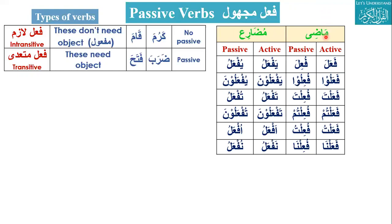In the madi tense, the active voice is fa'ala. The first letter gets dhamma (pesh), the second letter gets kasra, and the last letter doesn't change. If some letter has a sukoon, it does not change. So fa'ala becomes fu'ila — meaning 'it was done.'